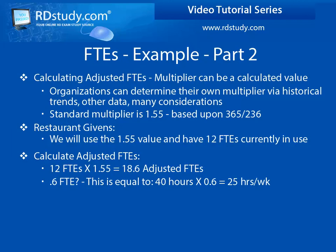So how can you have 0.6 of an employee, since our adjusted FTEs in our example was calculated to be 18.6? Remember, FTEs are units of time, not individual employees. So the 0.6 refers to 40 hours times 0.6, which equals roughly 25 hours per week.